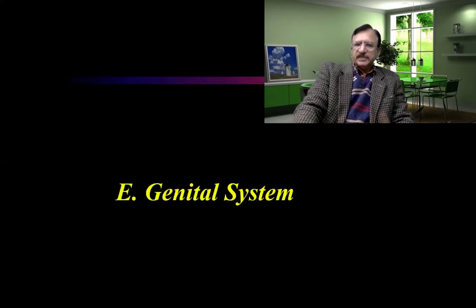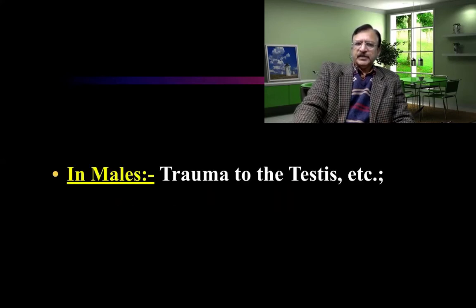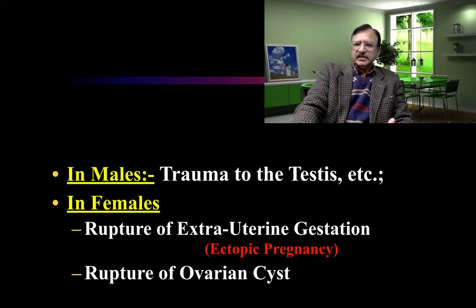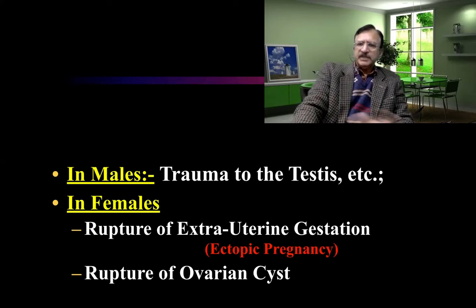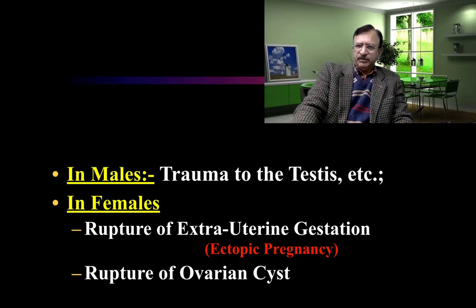In the genital system, in males, trauma to the testes can be a cause. In females, rupture of extra-uterine gestation — that is, ectopic pregnancy — and rupture of the uterine vessel are causes. These are just a few examples; the causes can be many.